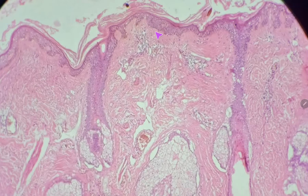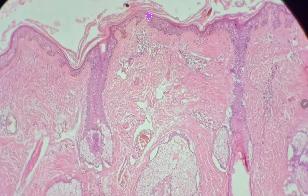This epidermis is stratified. The basal layer is called stratum basale or stratum germinativum. Above this stratum basale is stratum spinosum, or the prickle cell layer, and then the outer one is the stratum corneum. Cells of this stratum corneum dry to form keratin.